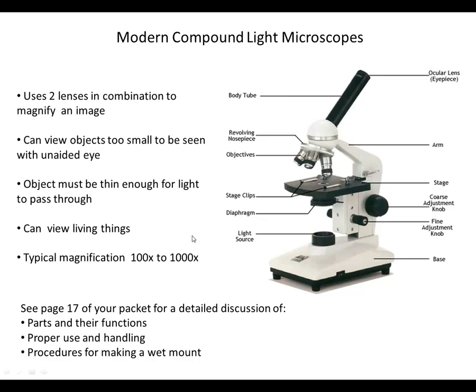One thing to be aware of is that when we're looking at specimens, the specimen must be thin enough for light to pass through. So when using a compound light microscope, we're not going to be able to look at something like a coin, because light can't shine through metal and therefore can't be transmitted through the lens system to our eyes. There is a kind of microscope called a stereoscope that we will use later on in the unit, which will allow us to look at three-dimensional features of objects that are a little larger or thicker.